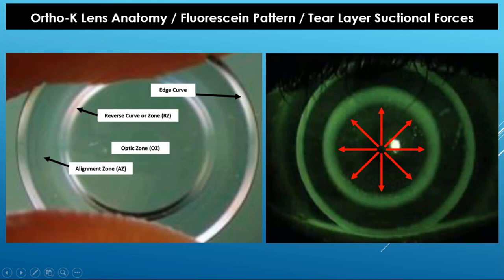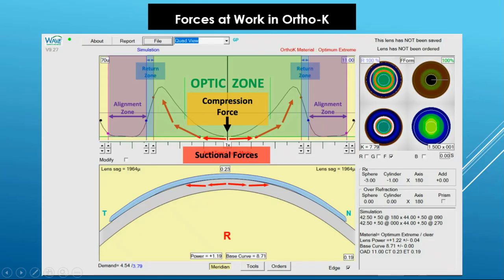Becoming a Wave wizard starts with knowing the anatomy of an Ortho-K lens, how the different lens zones contribute to the environment that creates the Ortho-K effect, and how making changes to these zones affects the results. Ortho-K works primarily as a result of hydraulic tear layer forces created by having a closed system underneath the contact lens, where tears are sucked from the lowest or thinnest layer to the highest or thickest layer, displacing the corneal epithelium in the same direction. The return zone is the primary driver of the outward suctional force, creating a gradient between the thin central tear layer and the thick return zone tear layer. The higher the return zone tear layer, the greater the gradient and the greater the outward tear layer force.